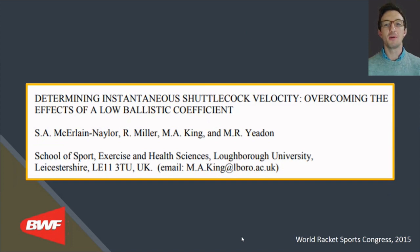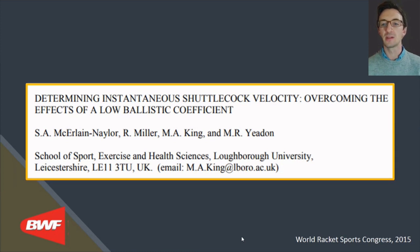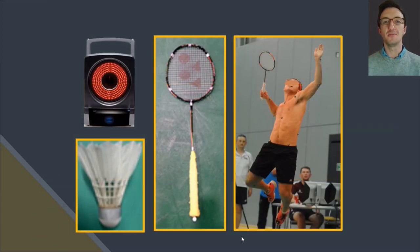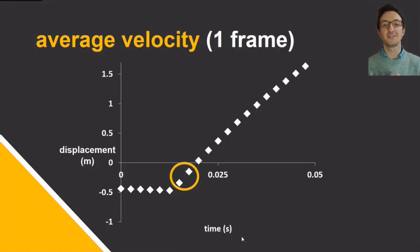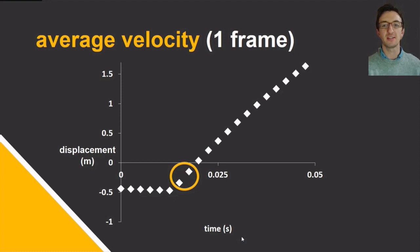We wanted to quantify the effect this curve-fitting method had on the calculated post-impact shuttle speeds before applying those speeds within any whole-body technique analysis study, which we did in a conference paper from the World Racket Sports Congress. We attached reflective tape to the tip of the shuttlecock tracked by motion capture cameras, and 25 experienced male badminton players ranging from county to international standard each performed three maximal effort jump smashes.